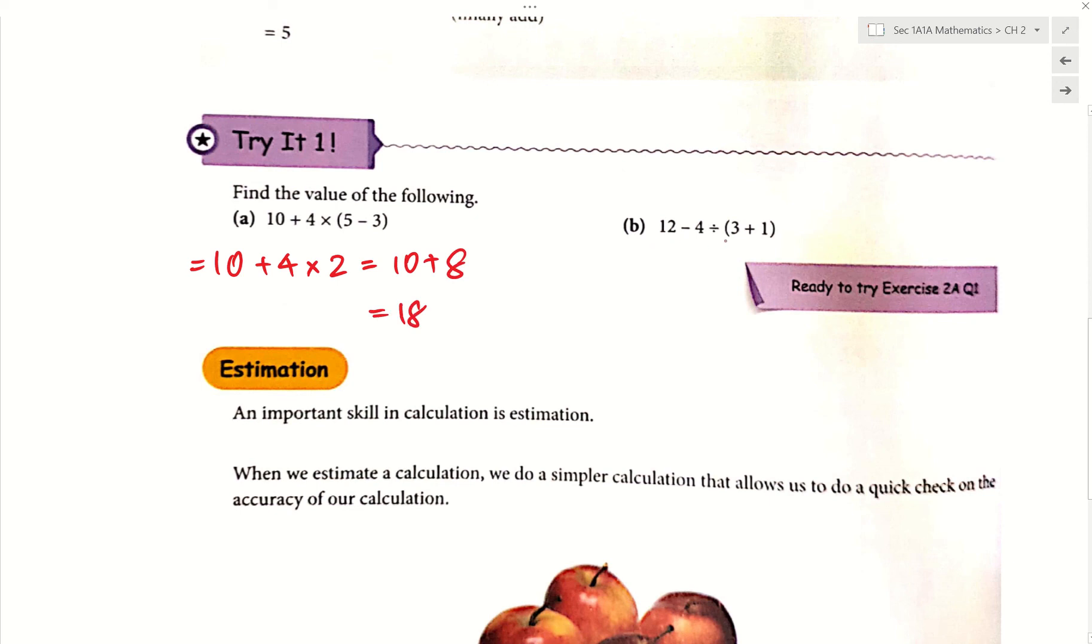12 minus 4 divided by 3 plus 1. We do the bracket first. So everything else copy down. 12 minus 4 divided by 3 plus 1, that is 4. Next, minus and divide. What do we do first? Divide. So I keep the 12 minus. 4 divided by 4 is 1. 12 minus 1 is 11. Finish.